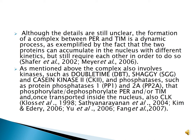Although the details have been unclear, the formation of a complex between PER and TIM is a dynamic process, as exemplified by the fact that the two proteins can accumulate in the nucleus with different kinetics but still require each other in order to do so. The complex also involves kinases such as Doubletime, Shaggy and Casein Kinase 2, and phosphatases such as Protein Phosphatases 1 and 2A, which phosphorylate or dephosphorylate PER or TIM, and once transported inside the nucleus, also CLK.